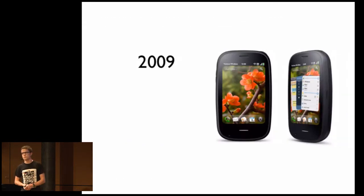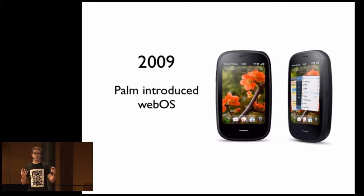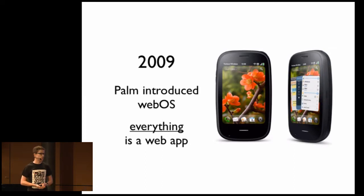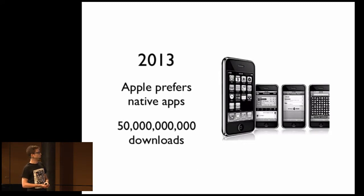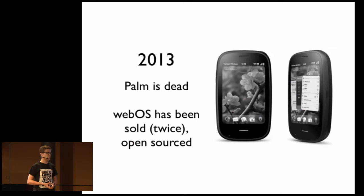Another interesting example is in 2009 when Palm introduced WebOS. Palm had been doing great stuff with mobile for a few years. They had the idea that if you want to build an operating system for the mobile world, maybe the good idea is to build everything as a web app. They built this thing where the whole interface was based on WebKit, and all the applications were written in HTML, CSS, and JavaScript. But by 2013, Apple preferred native apps, with over 50 billion downloads from the App Store. As for Palm, things went really bad — Palm doesn't exist anymore, and WebOS was sold twice and kind of open-sourced. It's a very sad story.